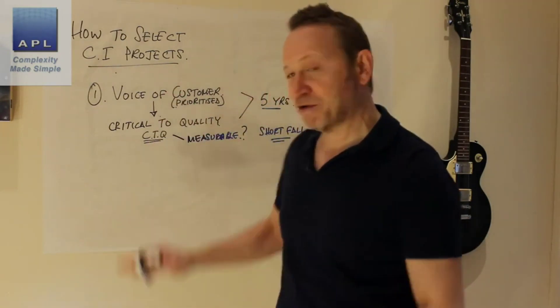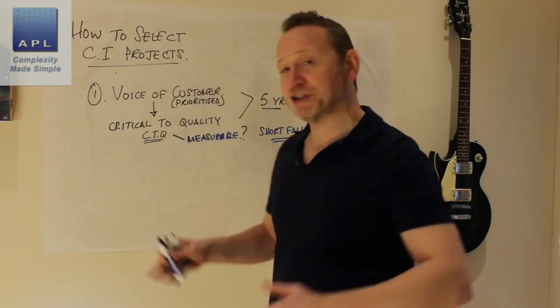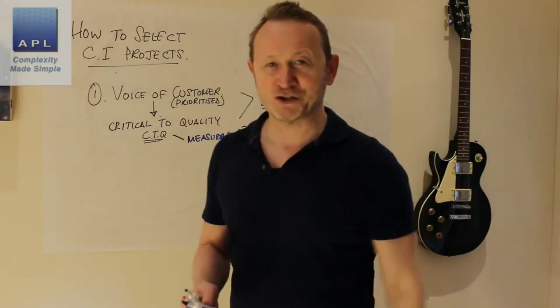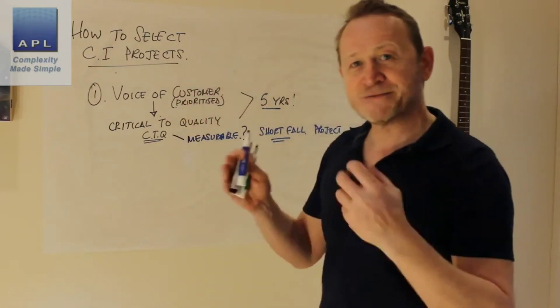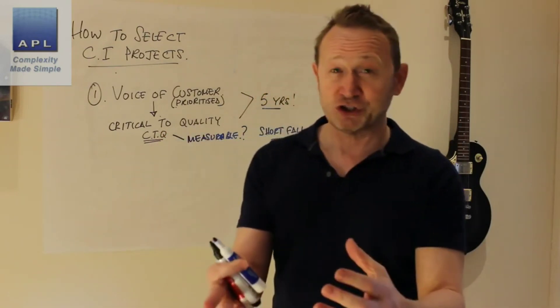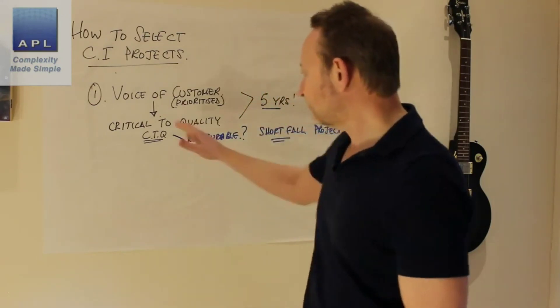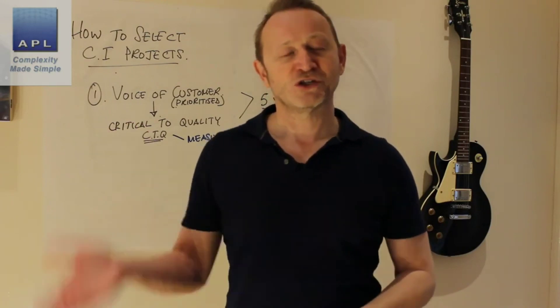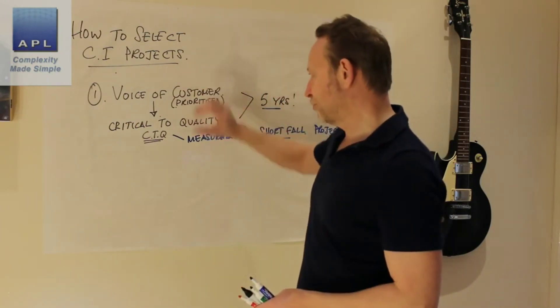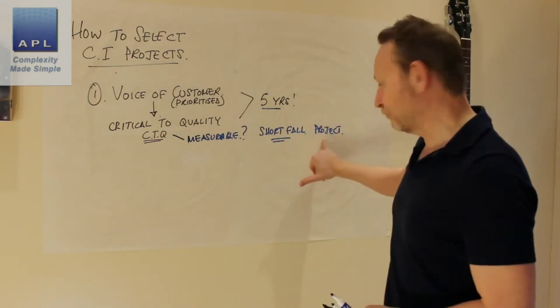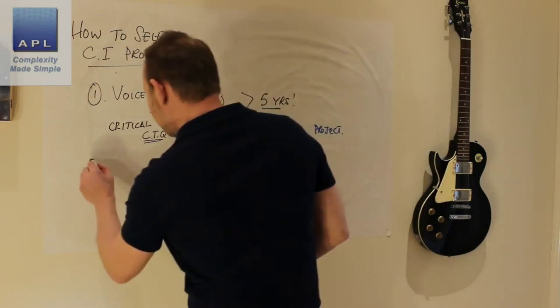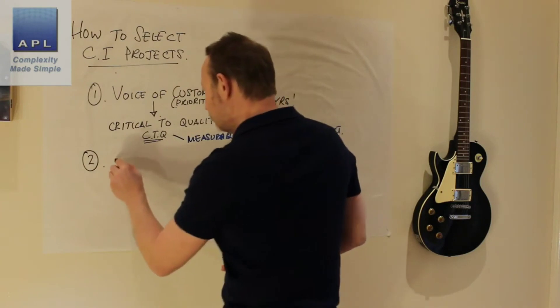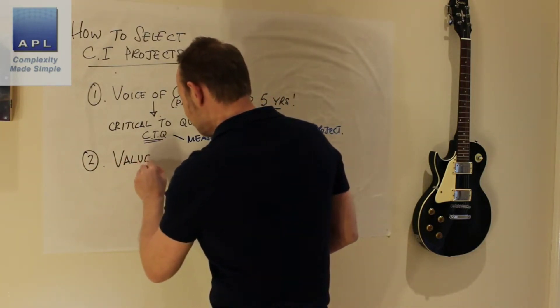Doing it that way is great because it can pick out projects for Design for Six Sigma — it can tell your designers what to do when you're designing new products and services, but it also tells you for the products and services you currently have in production what things you should work on to improve. So: voice of the customer, CTQs, look for the shortfall, do a project — very straightforward.